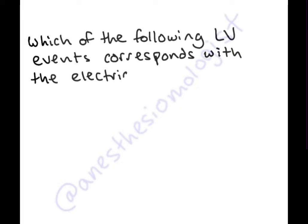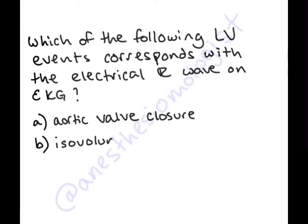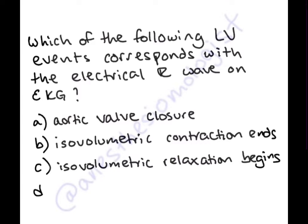Which of the following left ventricular events corresponds with the electrical R-wave on EKG? Is it aortic valve closure, isovolumetric contraction ending, isovolumetric relaxation beginning, or mitral valve closure?